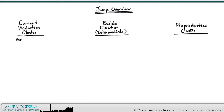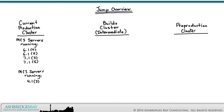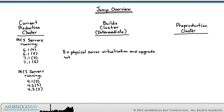The Current Production cluster has MCS servers running versions 6.1.4, 6.1.5, 7.1.3, or 7.1.5. It could also have older 4.1.3, 4.2.3, or 4.3.2 software. If you have other versions of CUCM deployed, you'll have to patch up to one of these versions. If you are running 8.x on physical servers, the virtualization and upgrade path is simpler and not really a jump. We're including 8.x virtualization and upgrade as a subset of jump so we can have a single drawing covering all of the different scenarios.